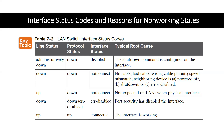If you do a show interface status and see 'down / down err-disabled' with interface status of 'err-disabled,' the typical root cause is that port security has disabled the interface. Error-disabled means an error has occurred on that interface and it is being disabled by the software.